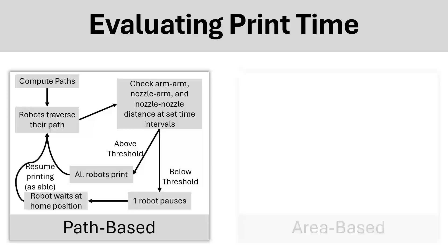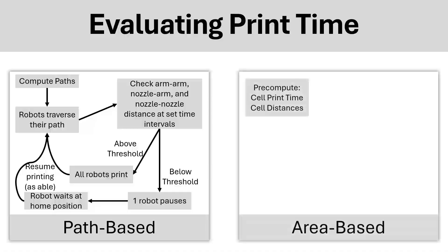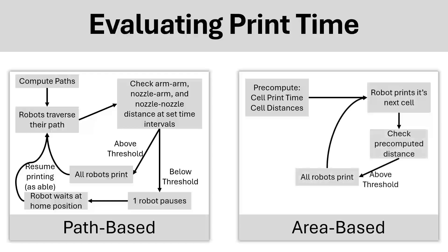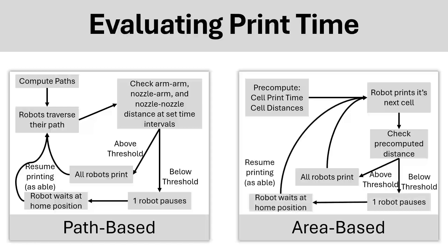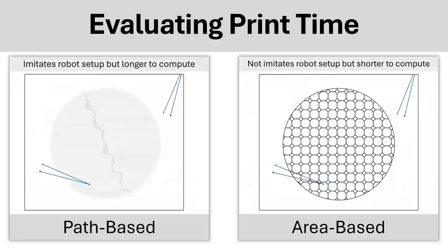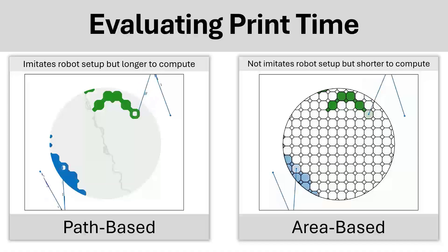We also develop an area-based approach, where we pre-compute cell distances and only use the cell ordering to check the pre-computed distance. If it's above a threshold, all robots will continue printing, otherwise one of the robots will pause and wait at its home position. We can visualize how this works, where the path-based imitates the robot setup, but it takes longer to compute.